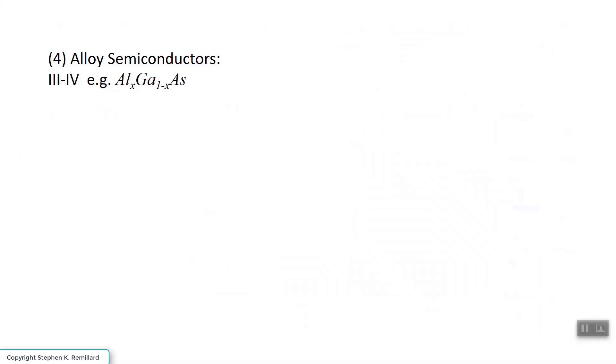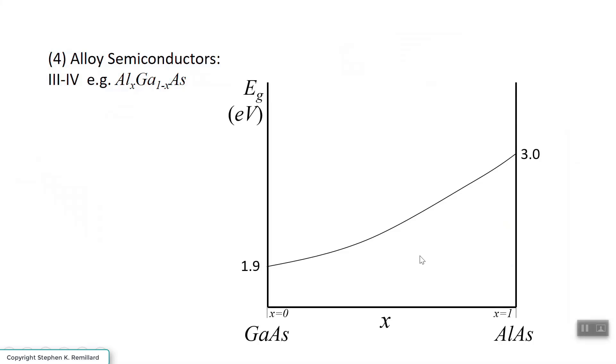You have to balance out one with the other. And so if X is 1, you have all aluminum and no gallium. If X equals 0, you have all gallium and no aluminum.